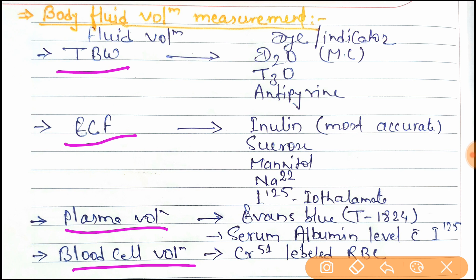Total body water - the indicator or dye used is D2O, T3O, and antipyrene. Most commonly, D2O heavy water is used. So what will be the trick to remember?